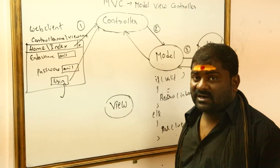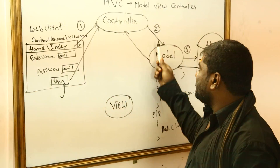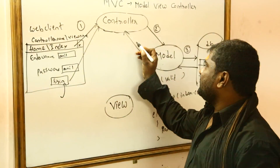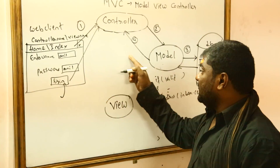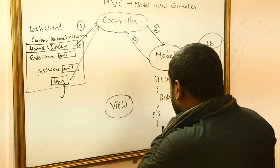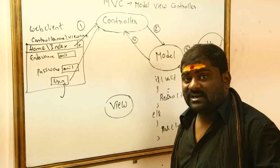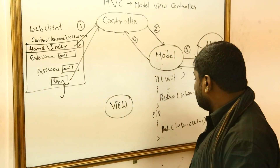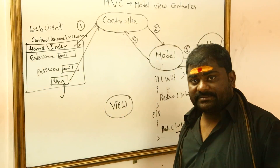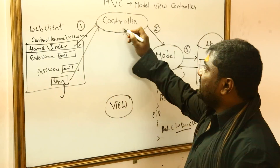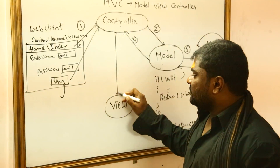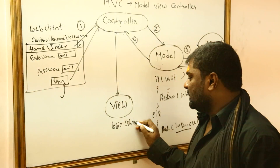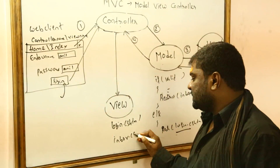The model will not directly communicate with the view. The model responds back to the controller. The controller then invokes the appropriate view — step five. If login is successful, the controller invokes inbox.cshtml; otherwise, it invokes login.cshtml. We have two views: login.cshtml and inbox.cshtml.